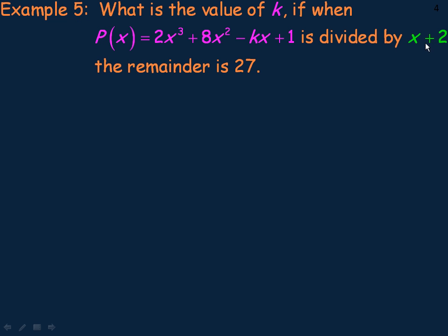Now we're talking about dividing this polynomial by x plus 2, so let's find out what the remainder would be in that division. We would put negative 2—x minus negative 2 is the same as x plus 2—negative 2 in place of x here, here, and of course here. That should equal 27, because we're told that the remainder is supposed to be 27.